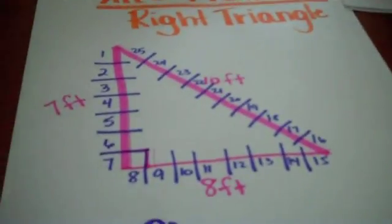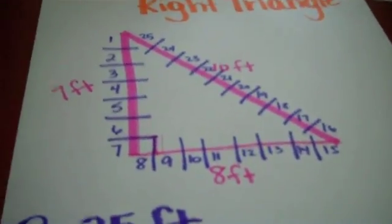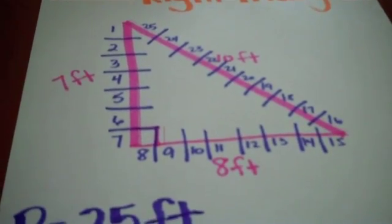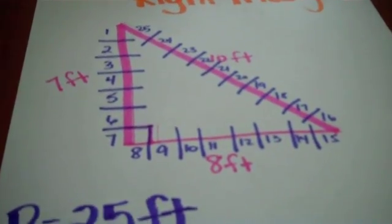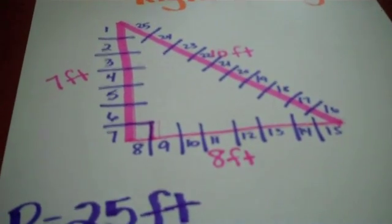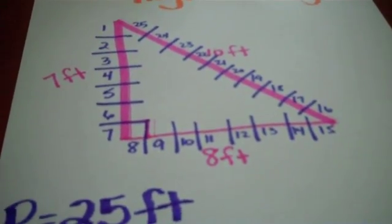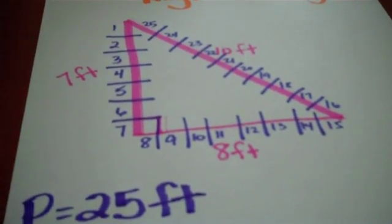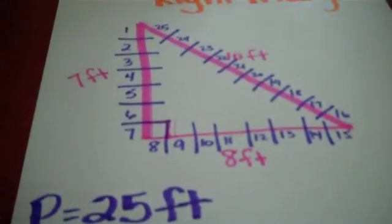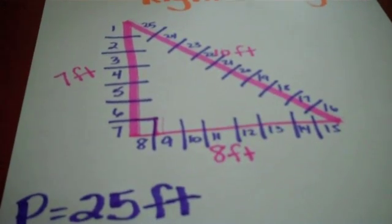Next we're going to talk about how to find the area of this figure. When we talked about this in class we talked about the fact that a right triangle is simply half of a rectangle. Now in order to find the area of a rectangle we would typically multiply length times width.